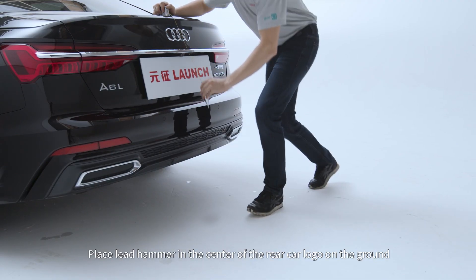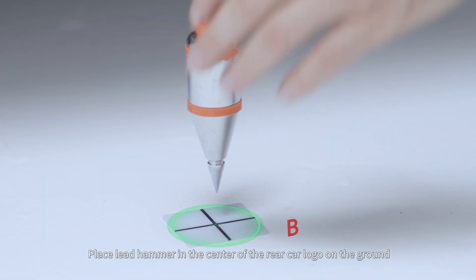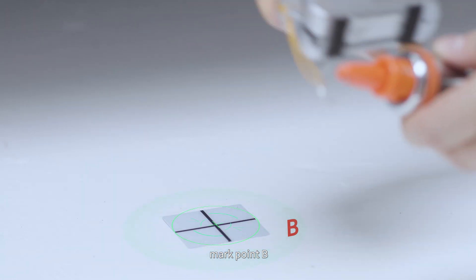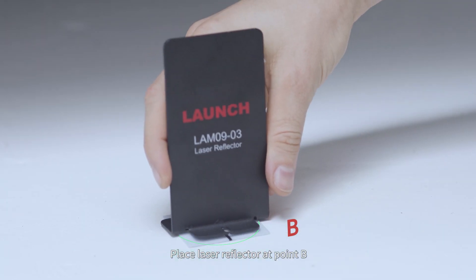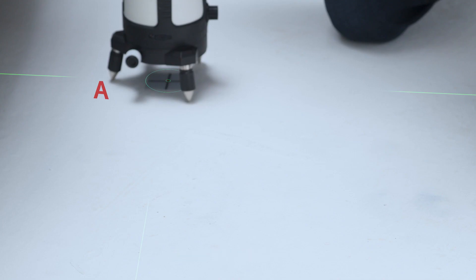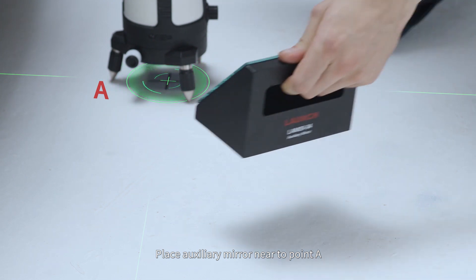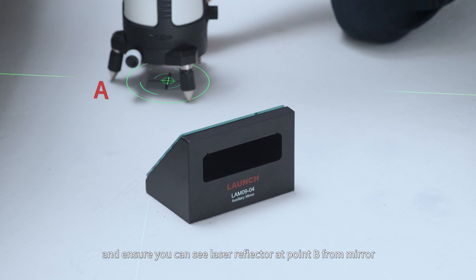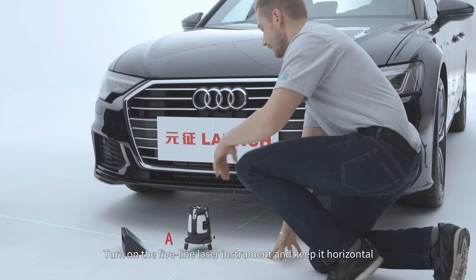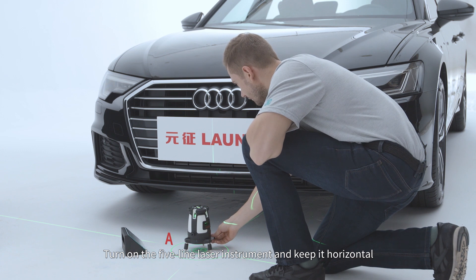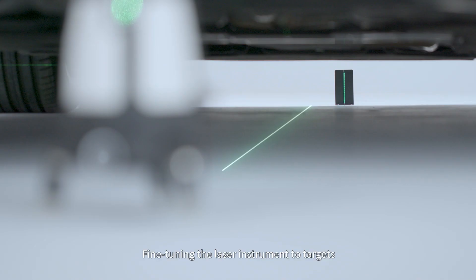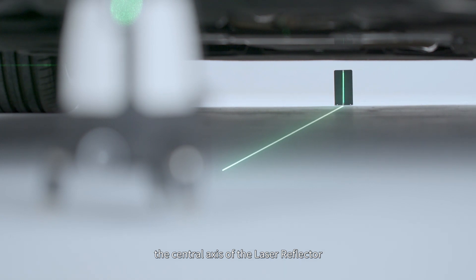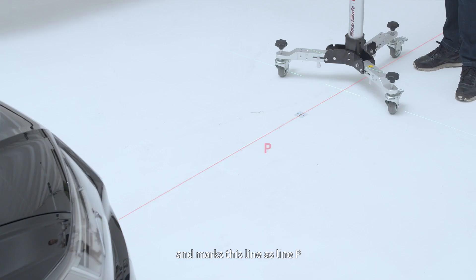Place lead hammer in the center of the rear car logo on the ground. Mark point B. Place laser reflector at point B. Place auxiliary mirror near to point A and ensure you can see laser reflector at point B from mirror. Turn on the 5-Line Laser Instrument and keep it horizontal. Fine-tuning the laser instrument to target the central axis of the laser reflector and marks this line as line P.